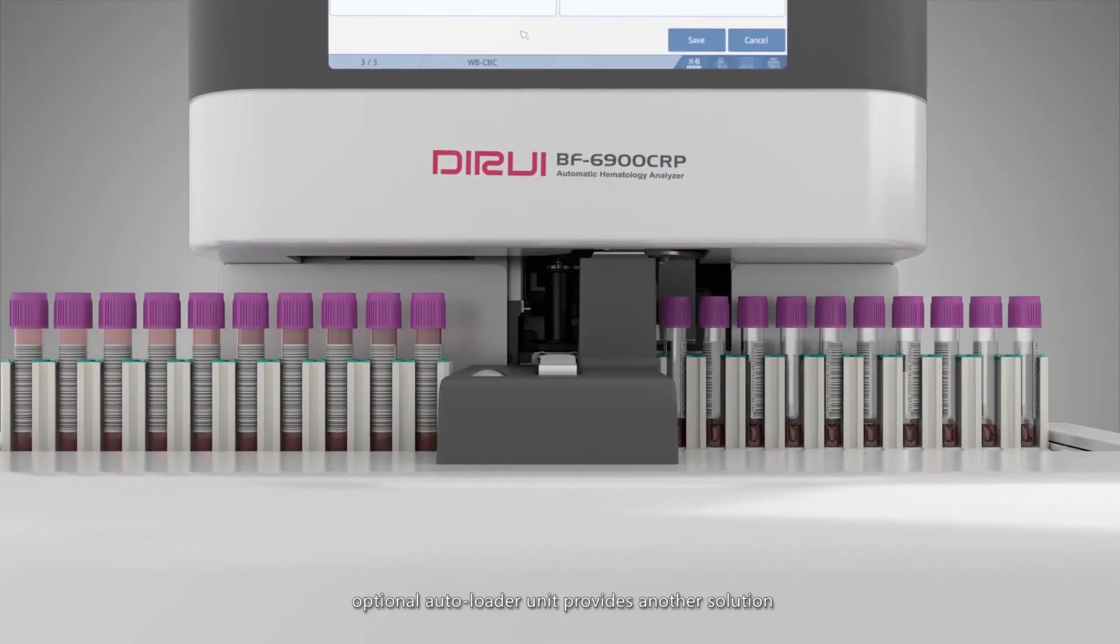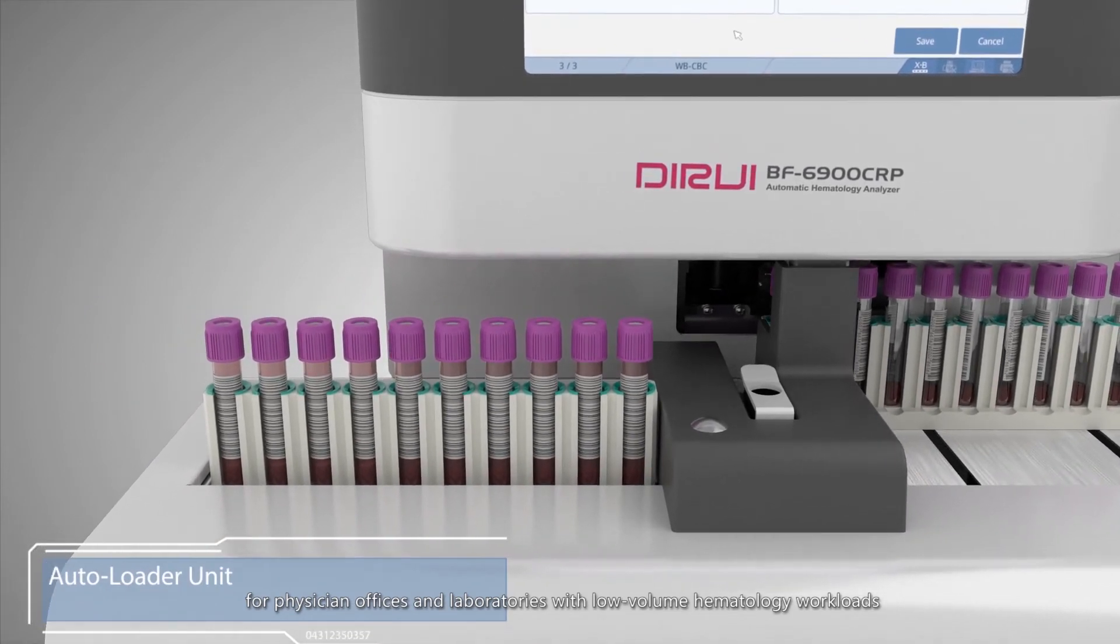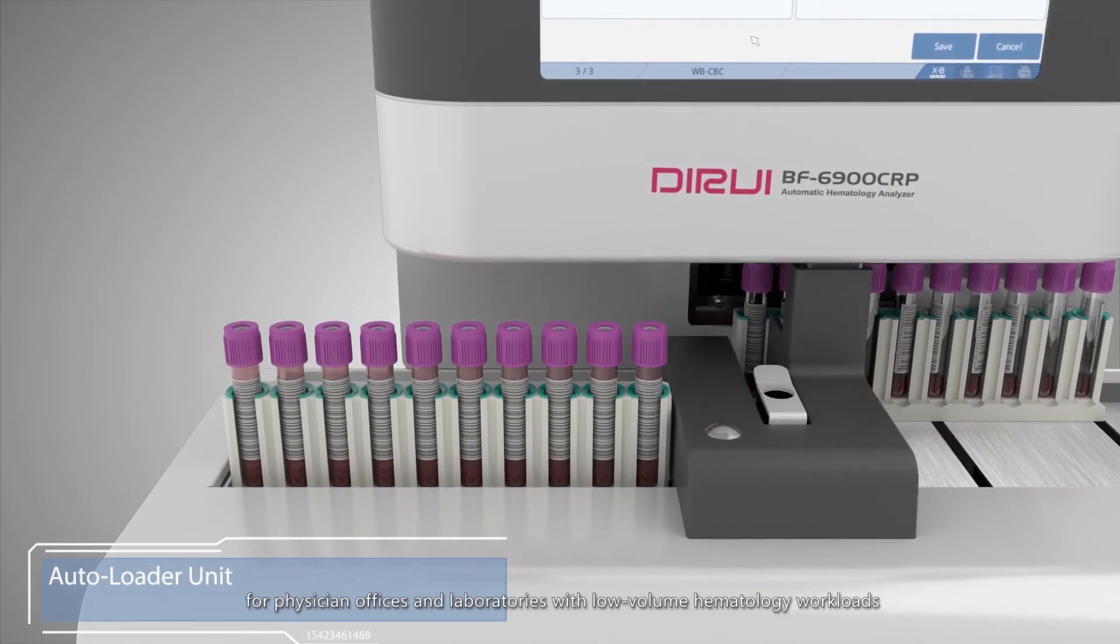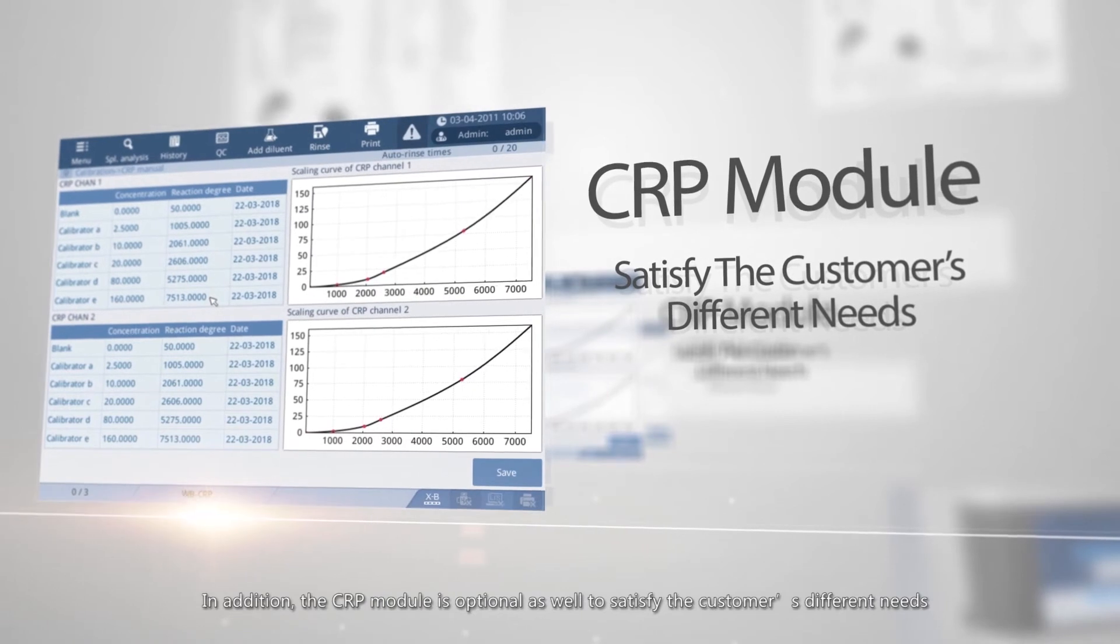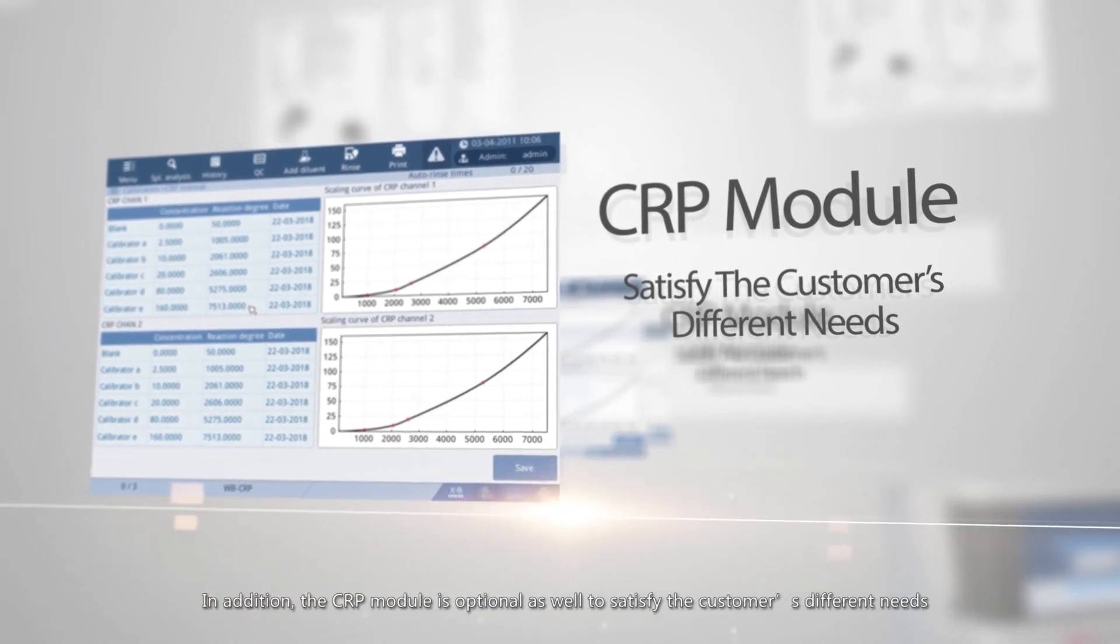Optional autoloader units provide another solution for physician offices and laboratories with low volume hematology workloads. In addition, the CRP module is optional as well to satisfy the customer's different needs.